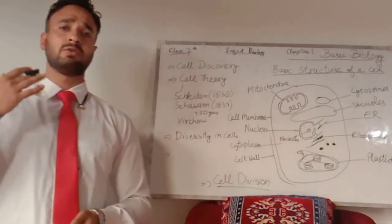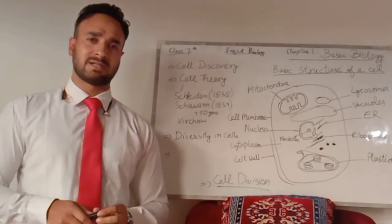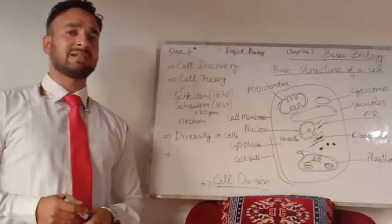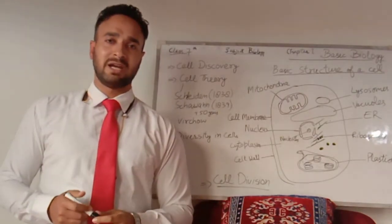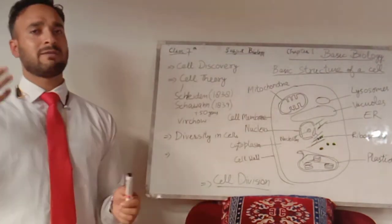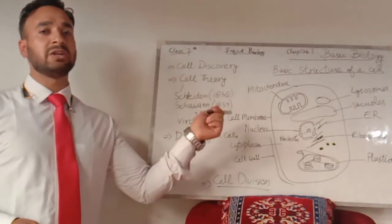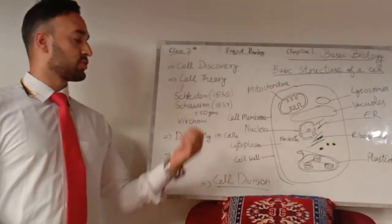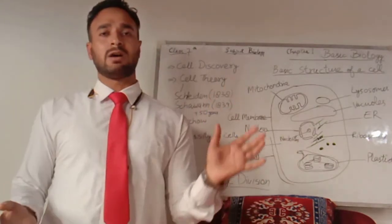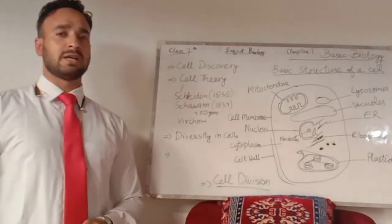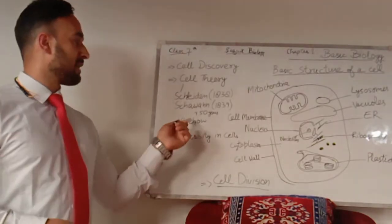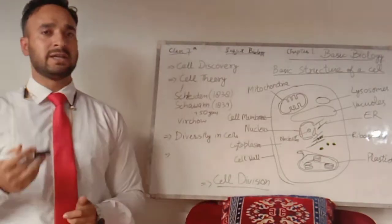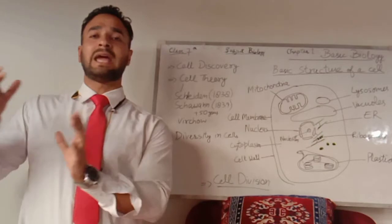There were three people, all Germans, who contributed to the modern cell theory. A German scientist named Schleiden, in 1838, said that all plants are made up of cells. Then another German scientist named Schwann, in 1839, said that all animals are made up of cells. So collectively, Schleiden and Schwann said that all plants and animals are made up of cells. Then, 50 years later, a third person — Rudolf Karl Virchow — said that all cells arise from pre-existing cells.